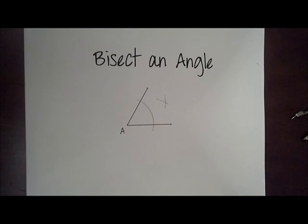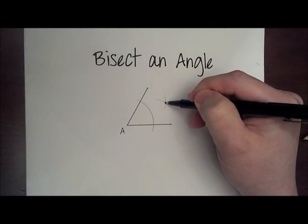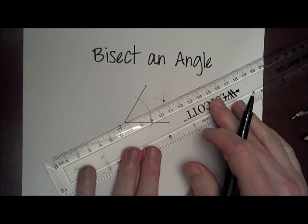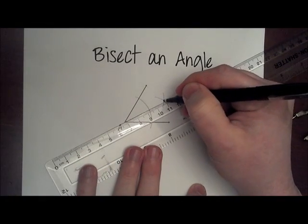And where those intersect, I will put a dot, and I will connect that dot to the vertex at A with the ray, starting at A and going through that point.